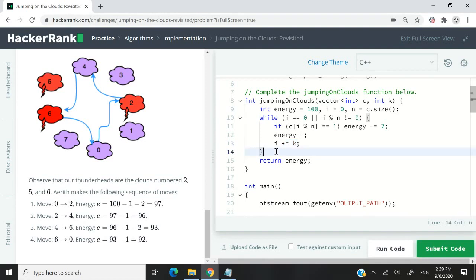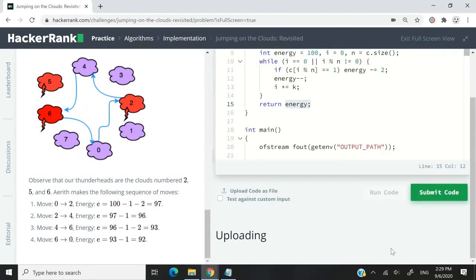So when this is done, when our player reaches back cloud zero, we need to exit our loop and simply return the value of our energy level. So that's the logic here.